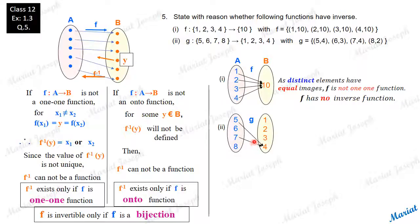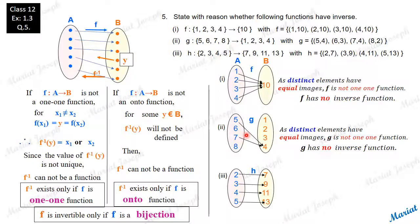But just by drawing these two arrows, we can make a conclusion. Distinct elements are having same image again. 5's image is 4, 7's image also is 4. So again, this function is not one-one. As distinct elements have equal images, g is not one-one function. Hence, no inverse for this g also.